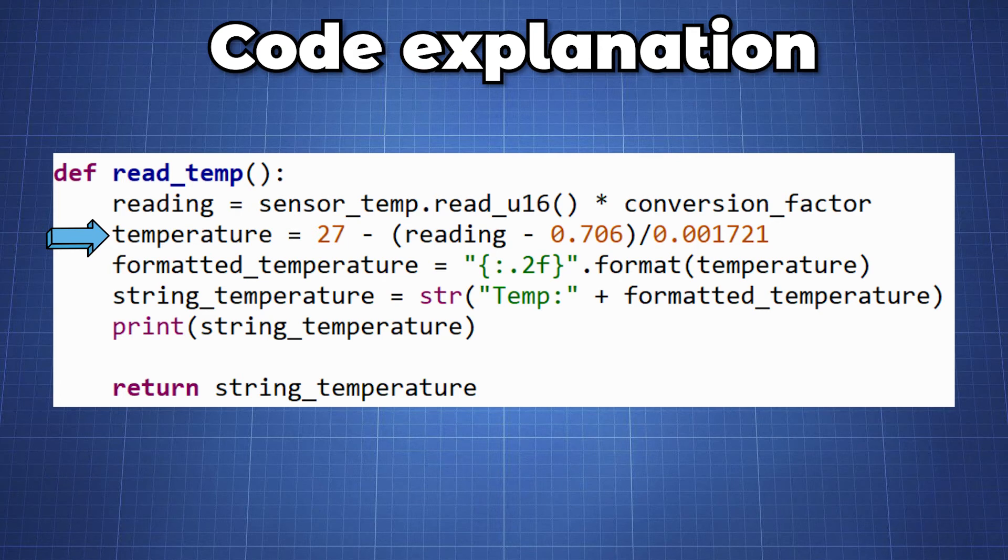We again have to do a second conversion which brings the temperature to celsius scale and this is done by the following line of code. Then we just format it to be two decimals save it in a string and return that string which is assigned to the variable temperature.